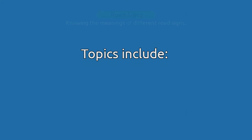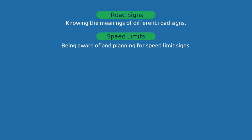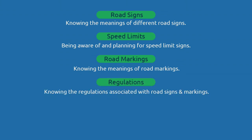Topics include: Road signs — knowing the meanings of different road signs. Speed limits — being aware of and planning for speed limit signs. Road markings — knowing the meanings of road markings. Regulations — knowing the regulations associated with road signs and markings.